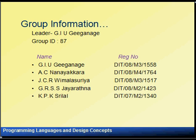Here is our group information: Group ID 87, Leader GIU Geeganagi, Members AC Nanayakar, JCR Vimalasuri, GRSS Jayaratna, and KPK Shrilal.